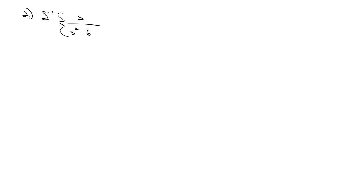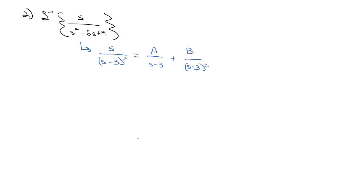Let's try a few more examples using partial fractions to find inverse Laplace transforms. Let's find the inverse Laplace transform of s over (s squared minus 6s plus 9). The denominator factors to (s minus 3) squared. Because we have a squared linear factor, we must account for each power of that denominator, so we'll have A over (s minus 3) plus B over (s minus 3) squared. Multiplying by the least common denominator gives s equals A(s minus 3) plus B.